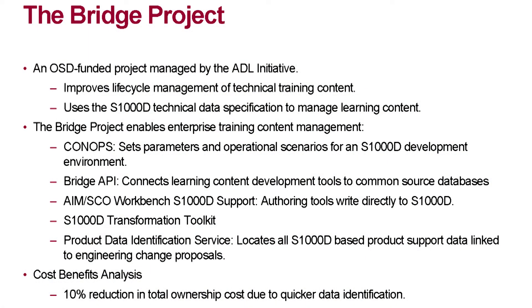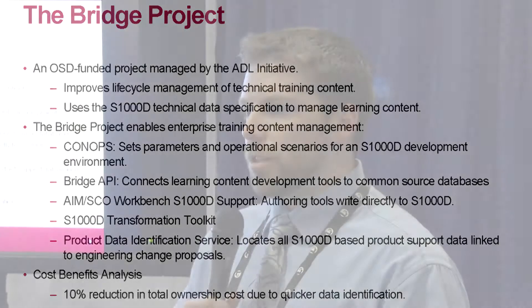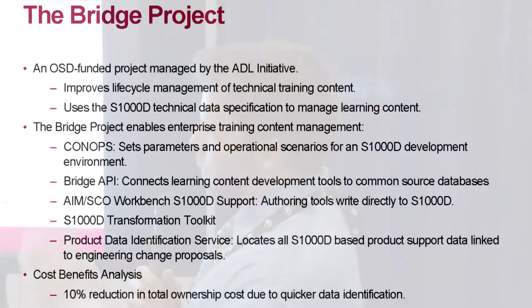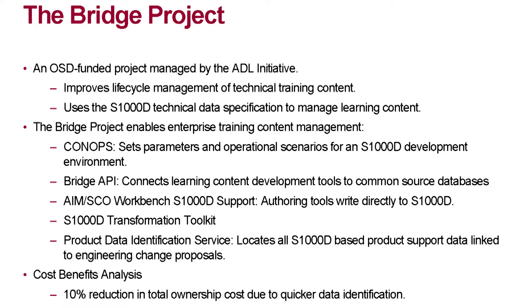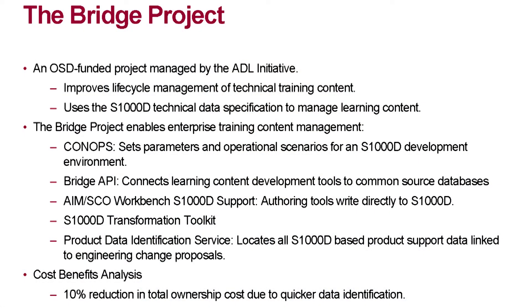One of the other tasks was an AIM and SCO workbench implementation of S1000D specifications, so that in those authoring environments S1000D data can be produced. There's also the S1000D Transformation Toolkit, which we'll get into in a few minutes. Finally, there was a product data identification service, based on engineering chain proposals, that helps identify where changes happened inside the S1000D data. A cost-benefit analysis showed a 10% reduction in total ownership cost.